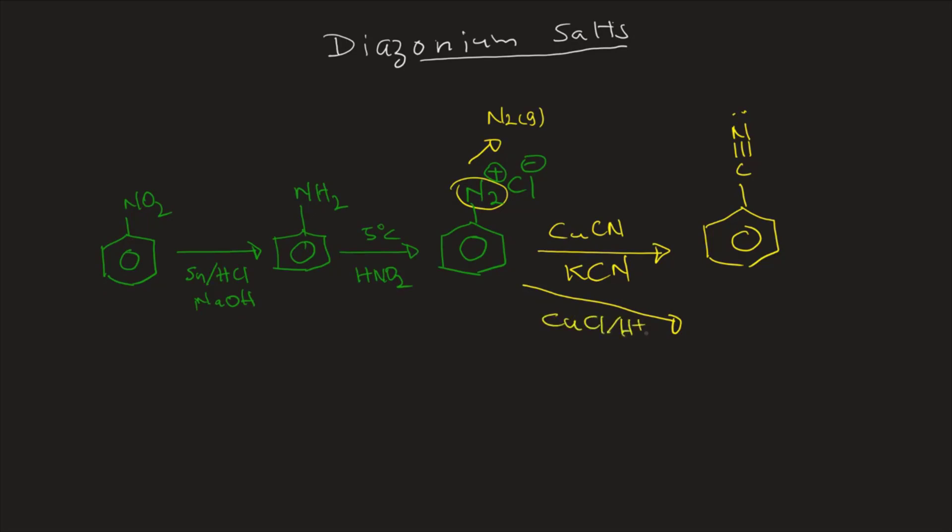So what's the other reaction? You can also react with copper chloride in the presence of acid, you're gonna get a chlorine atom attached to that. You can get copper bromide if you want a bromine. So that's how you use that one.